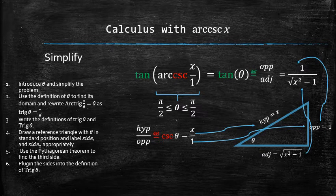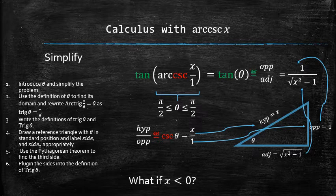However, this argument only works if x is greater than zero, because the hypotenuse in the reference triangle must be greater than zero. What do we do if x is negative?